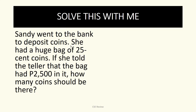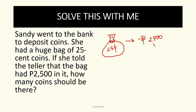Let's solve a workbook problem together. Sandy went to the bank to deposit coins. She had a huge bag of 25-cent coins. If she told the teller the bag had 2,500 in it, how many coins should there be? She has coins worth 25 cents (0.25), and the bag contains 2,500 pesos. The problem is most people stop here — they don't know whether to multiply or divide.